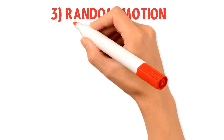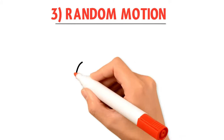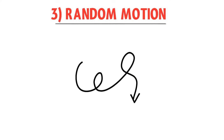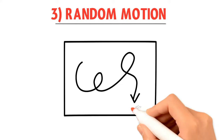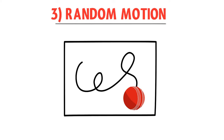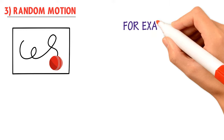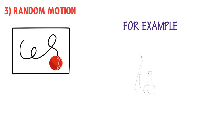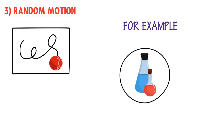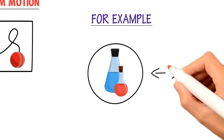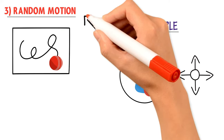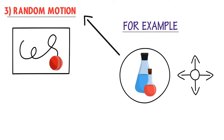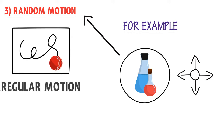The third type of translatory motion is random motion. The word random tells us something moving without having a proper direction. The irregular motion of a body in any direction without rotation is called random motion. For example, the motion of gas molecules — they move in any direction with no proper direction of movement, and such irregular motion of gas molecules is known as random motion or irregular motion.